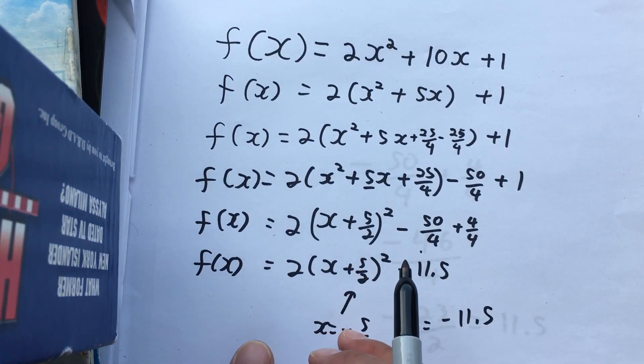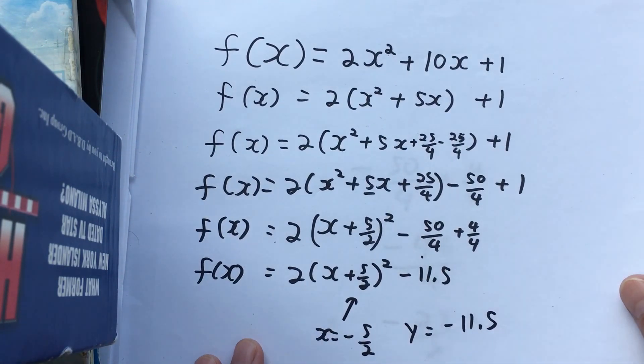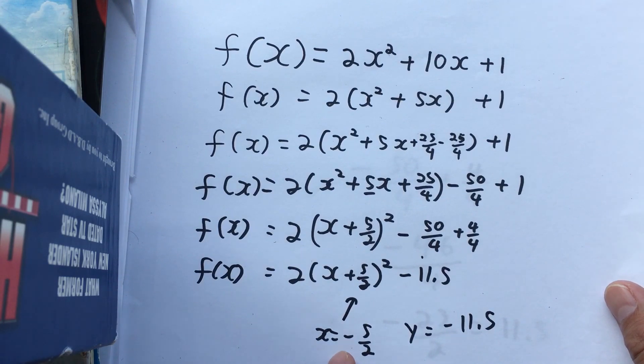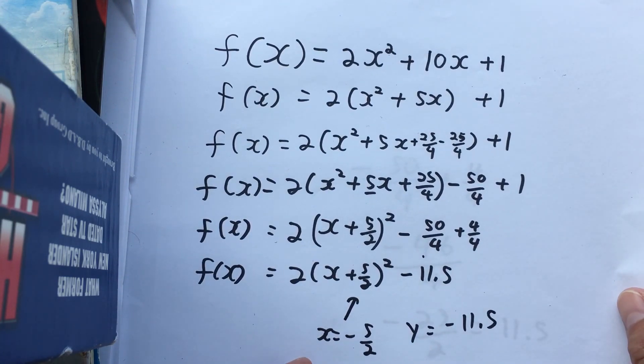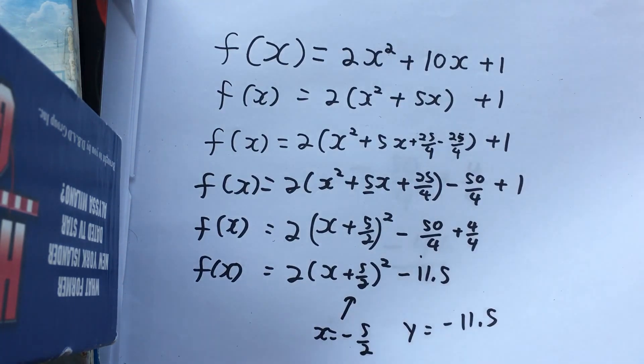For now, if you just remember that for now, and believe that you'll understand it fully later, that would be acceptable. So then to sketch this real quick, we'll go to negative 5 over 2, which is negative 2.5, negative 11.5, and then sketch your graph.